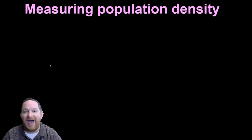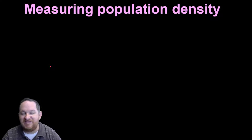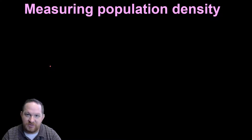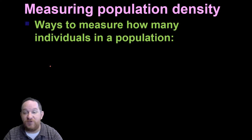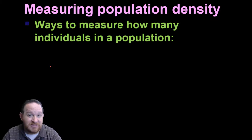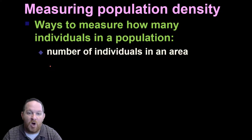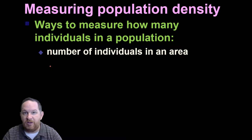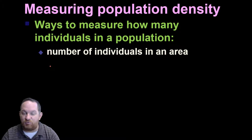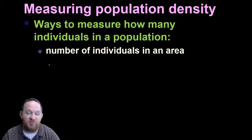So how do we measure population density? In other words, besides the formulas, how do we go out and actually count the size or the density of a population? There are a few ways scientists do this. One: if the population is really small, we can just count the number of individuals. If the range is small, we just go and count the number of individuals.